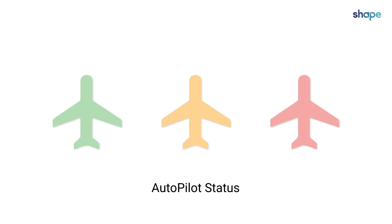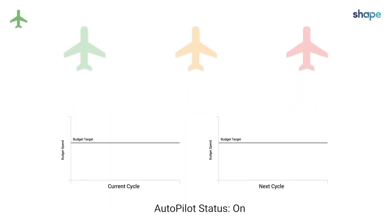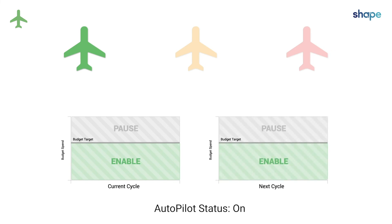Campaigns on Autopilot have one of three statuses: On, Standby, or Off. The Autopilot status is used to control permissions. The On status gives Autopilot permission to change campaign status according to your current active mode, and your manual control of the campaign is limited.